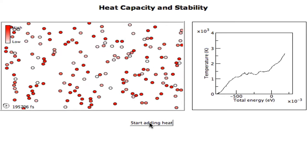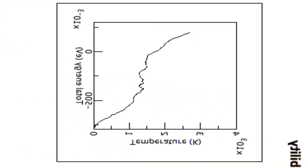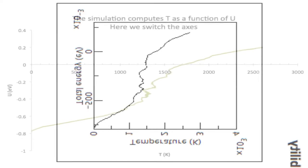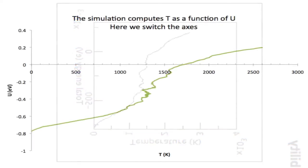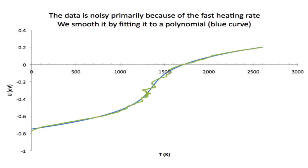Now I'm going to plot this in a slightly different way. I'm going to move the axis around so that temperature is on the x-axis and heat is on the y-axis. And now I'm going to smooth the data a little. It's a little rough here, especially in the middle, because I added heat quite fast. So I smooth it out now using the blue curve.